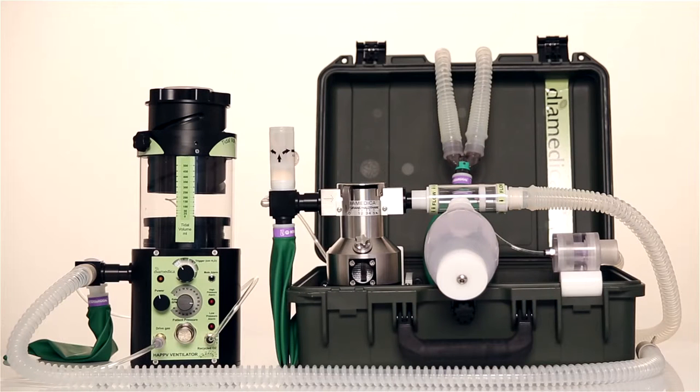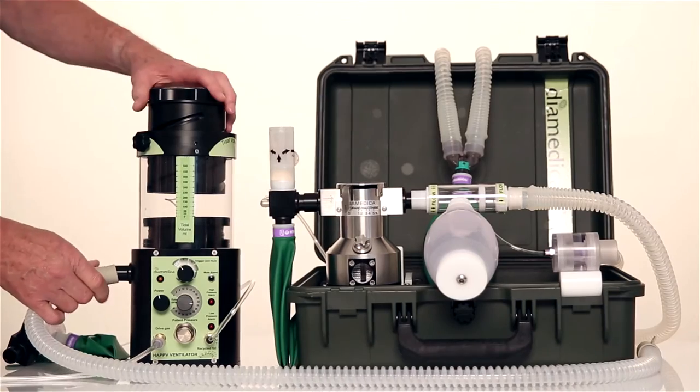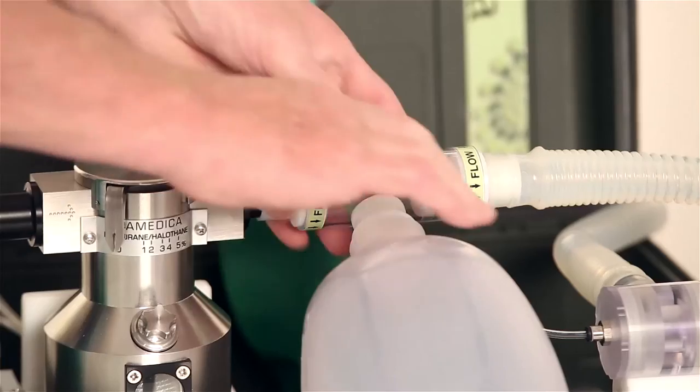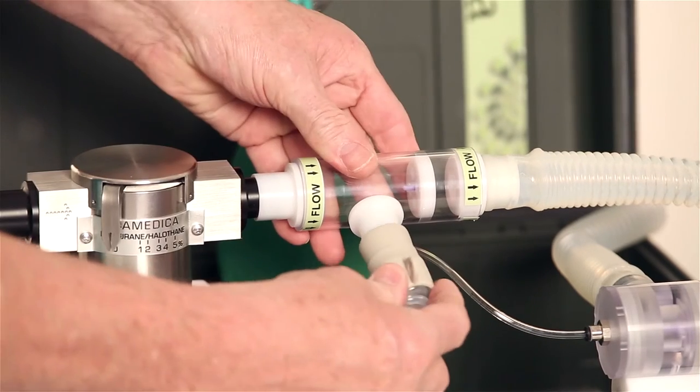If the Helix is used with the DPA-02 anesthetic machine, then the circuit block is removed and the ventilator outlet is simply connected to the DPA-inspiratory valve in place of the self-inflating bag.